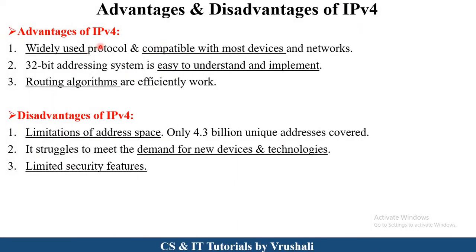The advantages of IPv4: it is a widely used address and most devices in a network are compatible with it. It is a 32-bit addressing system which is easy to understand and easy to implement. It also follows different network routing algorithms, so multiple devices can share information and communicate accurately. The disadvantage of IPv4 is the limitation of address space — only 4.3 billion unique addresses can be generated. As per the demand of new devices and technologies, this address is not sufficient, and it has only limited security features. All these disadvantages are overcome in IPv6.